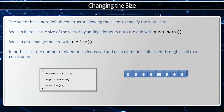In both cases, the number of elements is increased and each element is initialized via a constructor. This could be the copy constructor, the move constructor, or the default constructor. In this case, I called the default constructor when I initialized the vector and when I called resize, and I called the copy constructor when I said pushback.